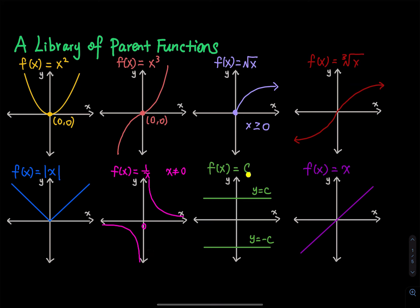Next is a horizontal line: f of x equals c, any constant. For example, f of x equals three gives a horizontal line above the x-axis; f of x equals negative five gives a horizontal line below the x-axis. For a horizontal line, the slope equals zero. The last one is the linear function f of x equals x — slope equals one, a straight line with y-intercept at zero comma zero.